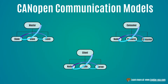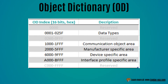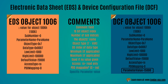Every CANopen node has an Object Dictionary, or OD, that contains standardized entries specifying device configuration. These entries can be accessed and modified through Service Data Objects, or SDOs. The EDS, which stands for Electronic Data Sheet, is a standardized file format that describes OD entries and is provided by vendors.